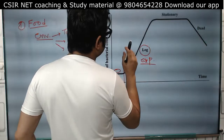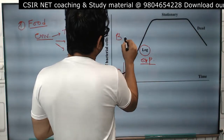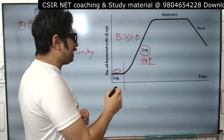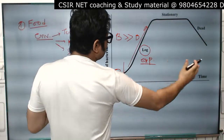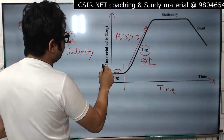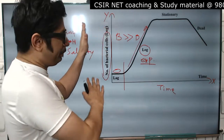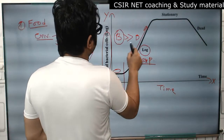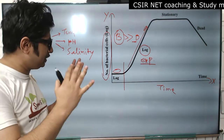In the log phase, the bacteria is growing fast. The birth rate of bacteria is way more than the death rate, which leads to an increase in the population size. In this growth curve, we see time on the x-axis and the number of bacterial cells on the y-axis. More bacterial growth than death — that's why exponential growth occurs during the log phase.